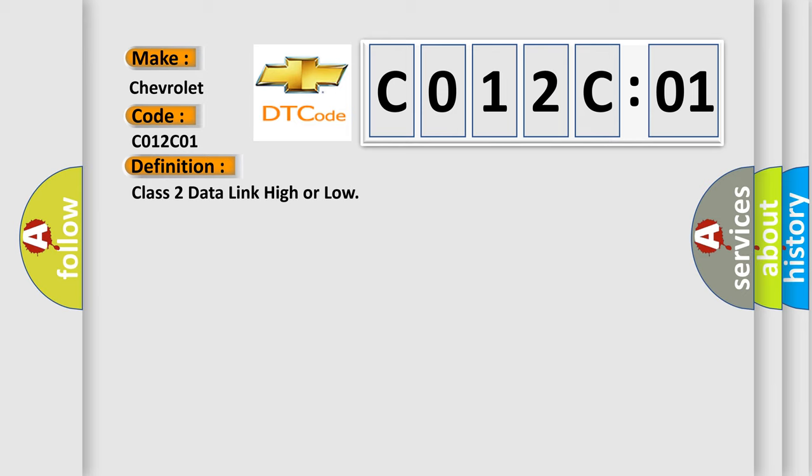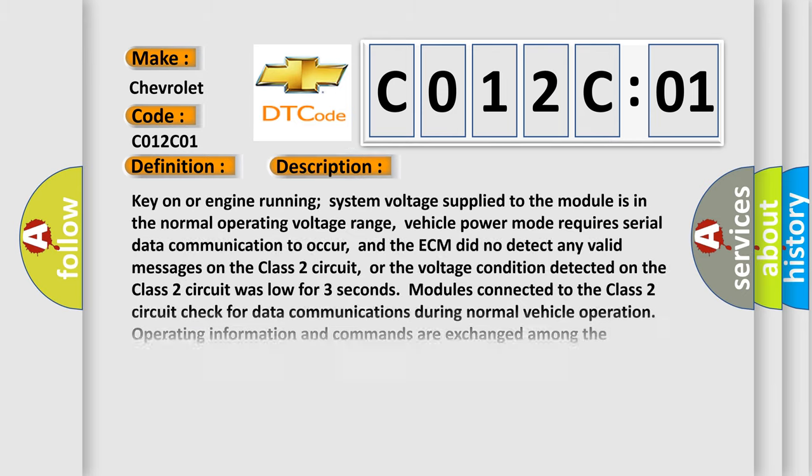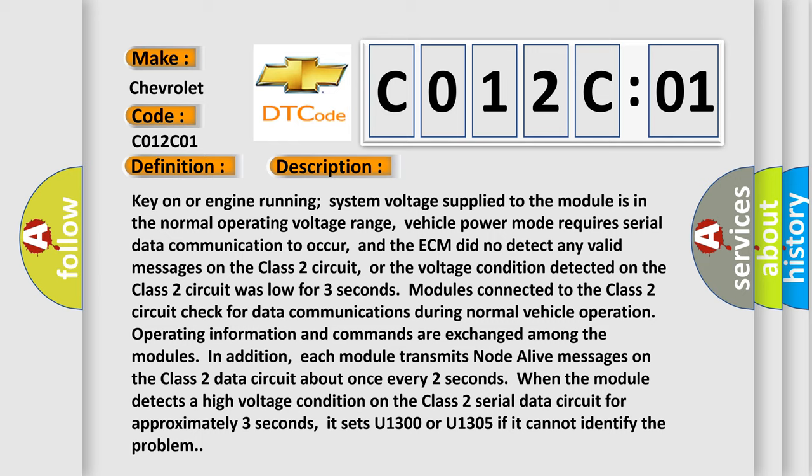And now this is a short description of this DTC code. Key on or engine running, system voltage supplied to the module is in the normal operating voltage range. Vehicle power mode requires serial data communication to occur, and the ECM did not detect any valid messages on the Class 2 circuit.